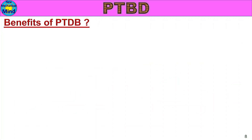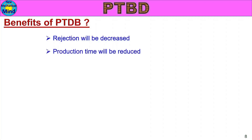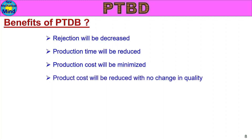The benefits of the Past Trouble Database are: first, rejection will be decreased or eliminated by applying the lesson learned, TGR and TGW. Second, production time will be reduced when rejection is decreased. Third, production cost will be minimized — product cost will be reduced with no change in quality.